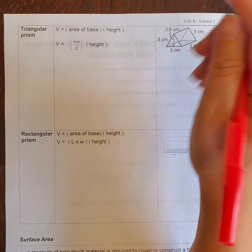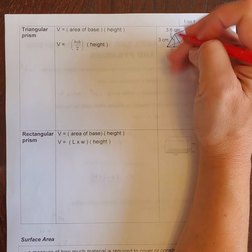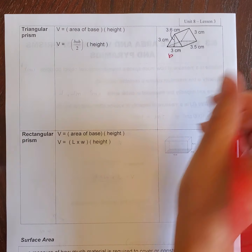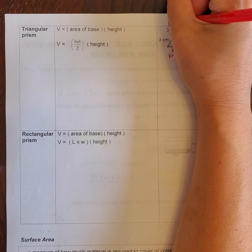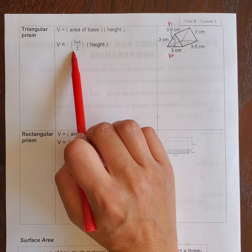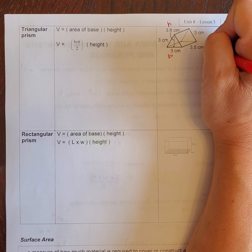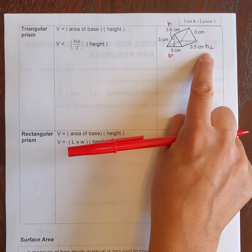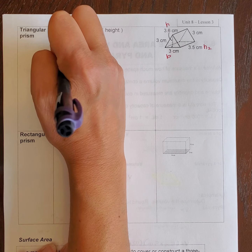Looking at the diagram, let's start with the base and height of the triangle. I'll label the base B. The height of the triangle is this side right here — that's the height of the triangle. Then I need to figure out the height of the prism, which I'll label as height 2, just to keep track that it's the second height I'm using.